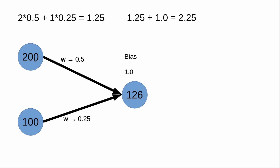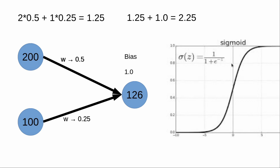For another example, if I put 200 and 100, you can calculate it yourself — the result is 126 — multiply by weights, add together, then add to bias. After we calculate the result for a node we put it into a function called the activation function. In this GDNative library I use the sigmoid activation function, which outputs a value between zero and one.